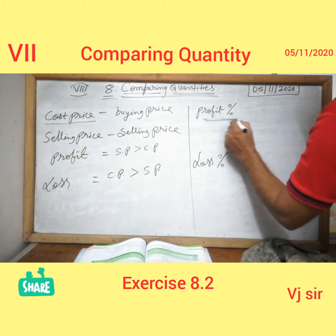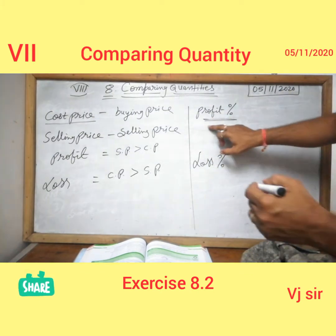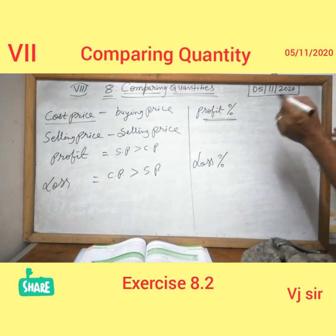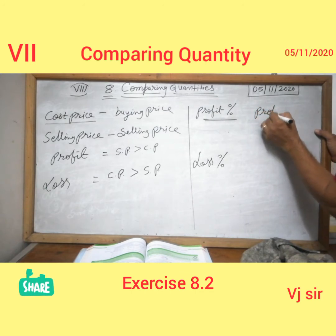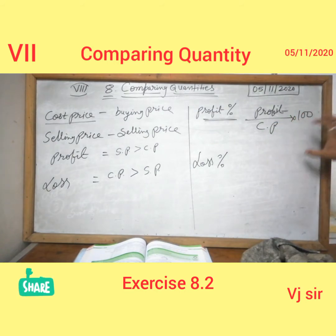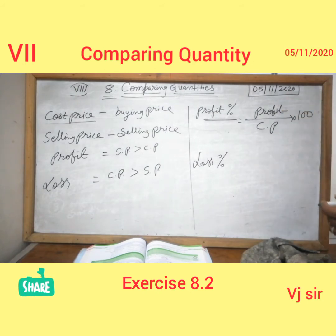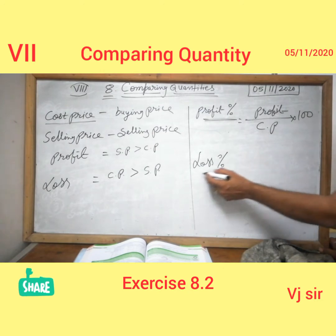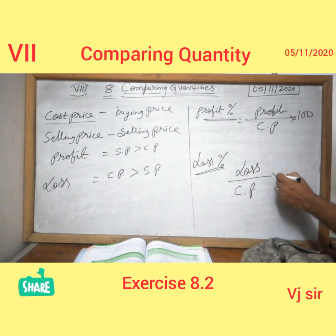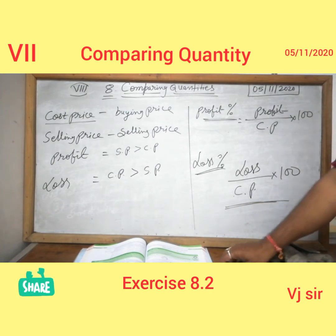There is one more term — profit percent. How do we find profit percent? It is very simple: put profit upon cost price, multiplied by 100. Put the value in this formula and you can find the profit percentage. Loss percentage means we put the value of loss upon cost price and multiply by 100 to find the loss percent.